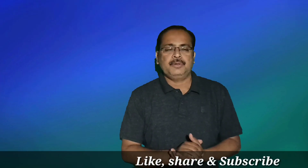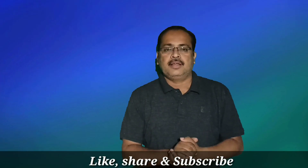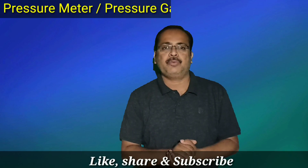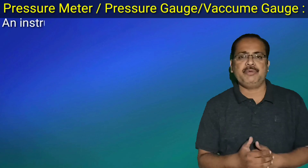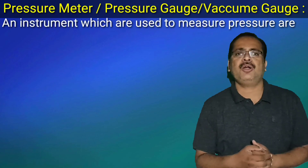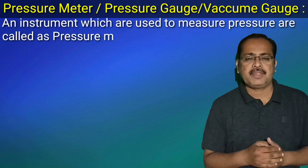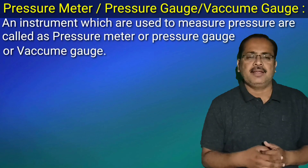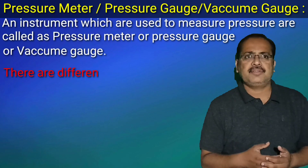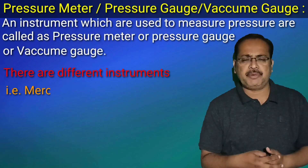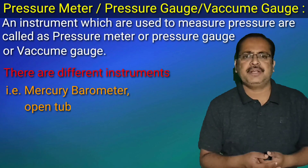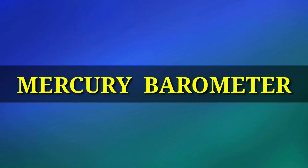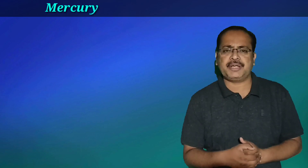Hello friends, today we will discuss pressure meters, pressure gauges, and vacuum gauges — instruments which are used to measure pressure are called pressure meters or pressure gauges. There are different instruments, such as the mercury barometer and open tube manometer. Today we will discuss the mercury barometer.